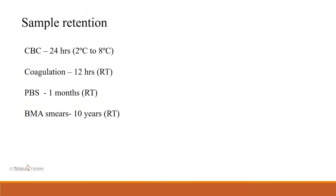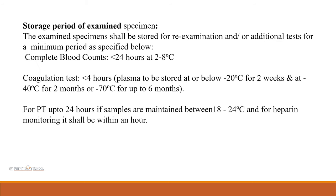Sample retention: for CBC, 24 hours; for coagulation, 12 hours at room temperature; peripheral blood smear can be retained for 1 month at room temperature; bone marrow smears for 10 years at room temperature. For storage of examined specimens: complete blood counts less than 24 hours at 2 to 8 degrees Celsius; for coagulation tests less than 4 hours, with plasma stored below minus 20 degrees Celsius for 2 weeks, minus 40 degrees Celsius for 2 months, or minus 70 degrees Celsius for up to 6 months. For PT, up to 24 hours if maintained between 18 to 24 degrees Celsius, and for anticoagulant monitoring it shall be within one hour.